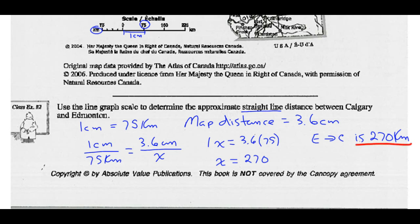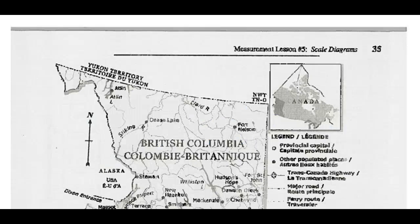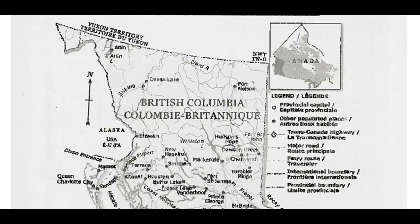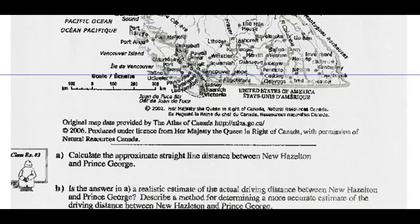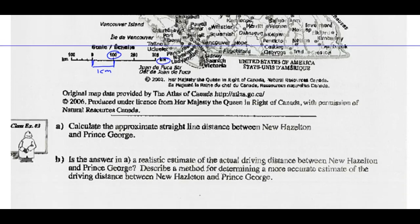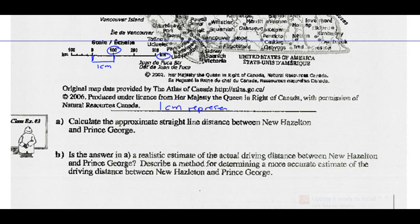That's how we use the line graph scale to determine distance on a map. Example 3 — we've got a map of British Columbia with a line graph scale. Measuring from 1 to 100 on the scale looks like about 1 centimeter, meaning 1 centimeter equals 100 kilometers. That is our line graph scale: 1 centimeter represents 100 kilometers.